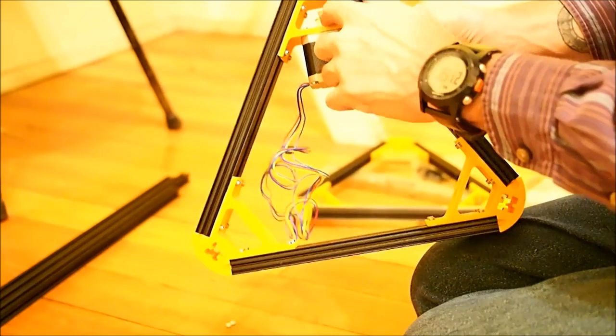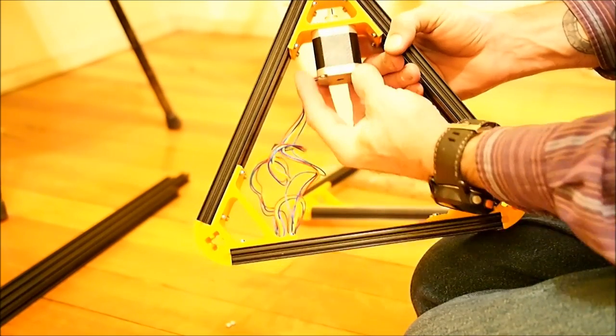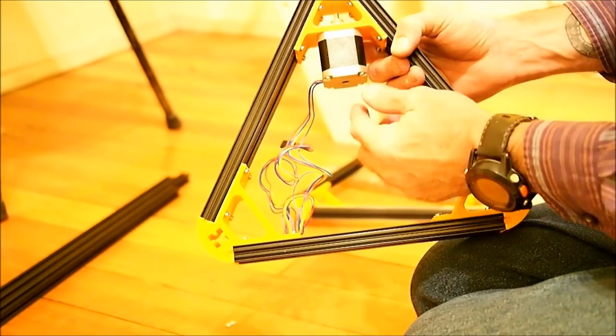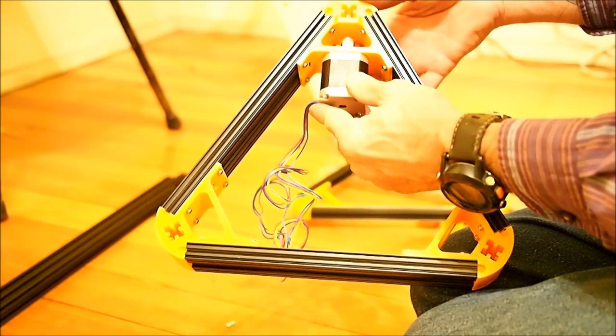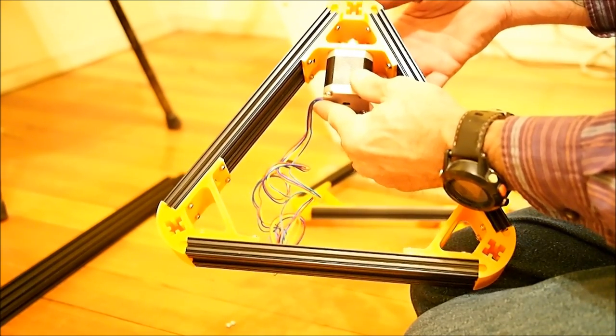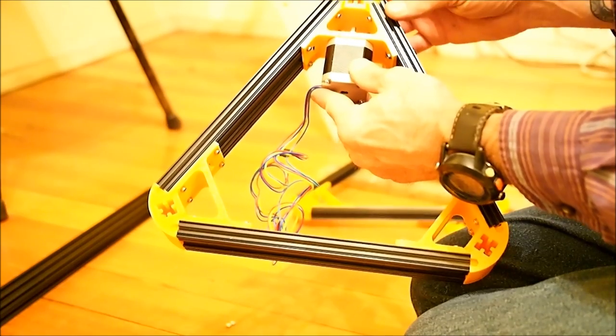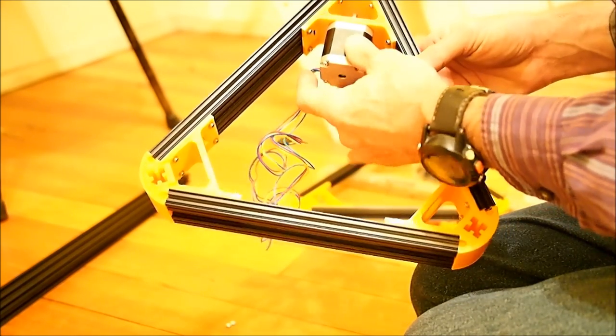Other than that, you're also going to want to put the pulley on before you install the motor. You don't have to tighten the pulley down. You're going to actually want to leave it loose so that we can align it as we install the belt. But you've got to put it on there because there's not enough space to put it on after the motor is installed.